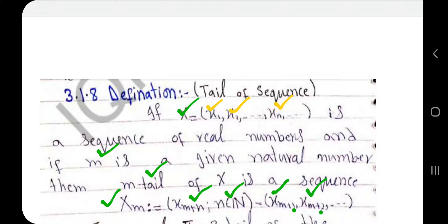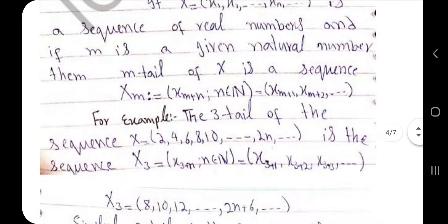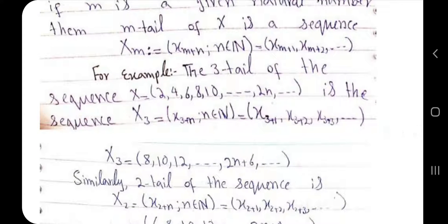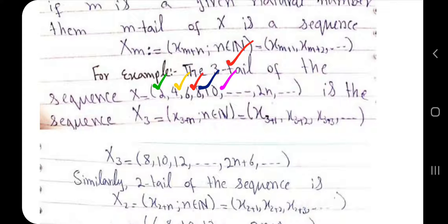Now let's look at an example. We are given a sequence x_n = 2n, which is the sequence of even numbers: 2, 4, 6, 8, 10, and so on — where the first term is 2, second is 4, third is 6, fourth is 8, and fifth is 10. We need to find the 3-tail of this sequence. The 3-tail means we skip the first three terms, so the first term of the 3-tail will come from x_4 onward.